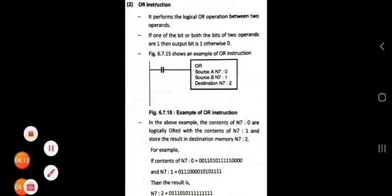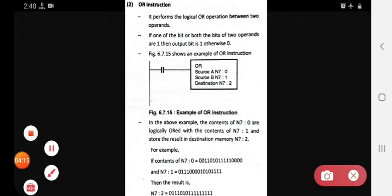Next, that is the OR instruction. It performs the logical OR operation between the two operands. Here we will have two operands for logical operation. Second, if one of the bit or both the bits of two operands are 1,